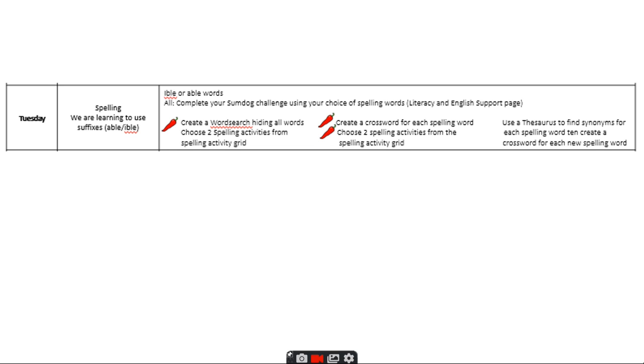And for three chilis, use a thesaurus to find synonyms for each spelling word, then create a crossword for each new spelling word. So it's a little bit different this week. When you create a crossword, you have to give clues for the word, not just telling people what the word should be. I've also set up your Sumdall challenge, so you'll be able to go on and choose your chili choice.